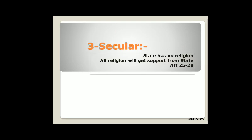The third and most important keyword is 'Secular.' Secular means the state has no religion. The word 'secular' was not originally in the preamble — later, according to the 42nd Constitutional Amendment Act of 1976, this keyword was inserted into the preamble. Secularism has two meanings: a negative perception and a positive perception. In India, we have taken the positive perception — the state will not interfere in the religious affairs of citizens.